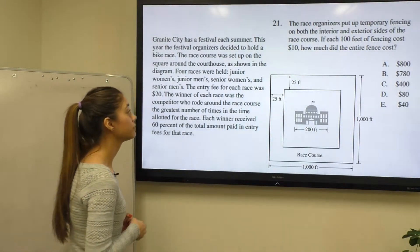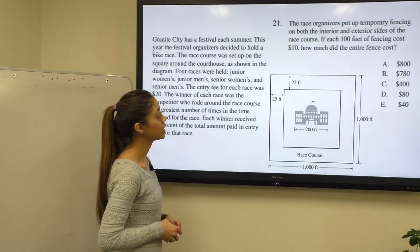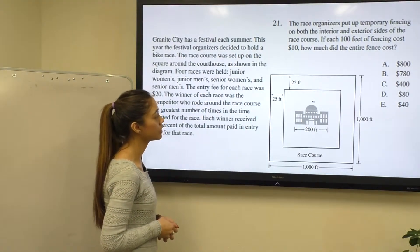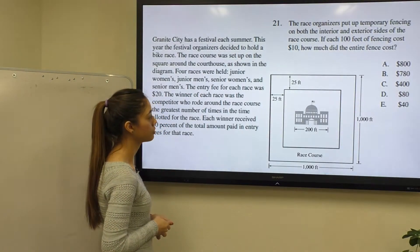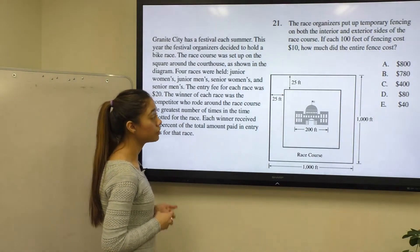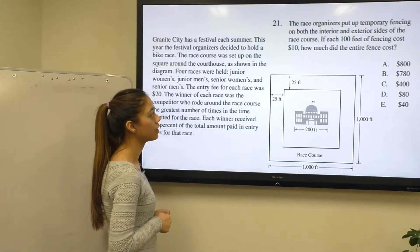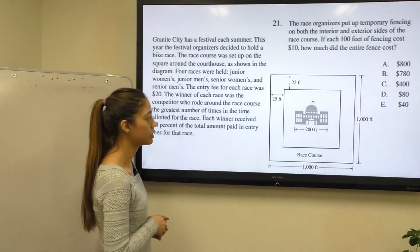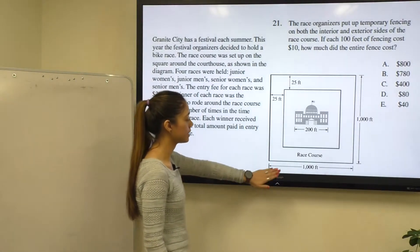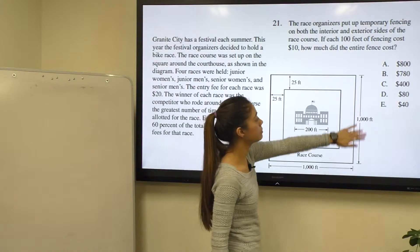So the actual question for 21 says the race organizers put up temporary fencing on both the interior and exterior of the race course. If each 100 feet of fencing cost $10, how much should the entire fence cost? In this case they're telling us that they put fencing on the outside, meaning the whole square, and the inside, which would be the smaller square.